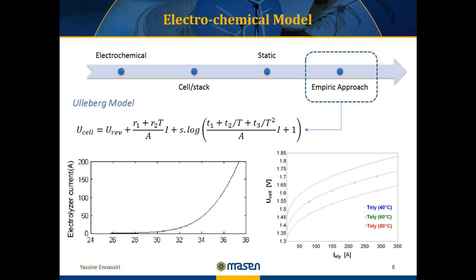The electrochemical model I chose to work with is the one developed by Ulleberg, which is the most used in modeling studies. This is the characteristic equation of the cell stack. It takes into account the impact of temperature on the current-voltage characteristics of the cell, as illustrated in the graph. Using this model, we can not only calculate hydrogen and oxygen production using Faraday's law, but also observe the variation of different electrolyzer parameters, especially when it is powered by an intermittent source of electrical energy such as PV and wind.